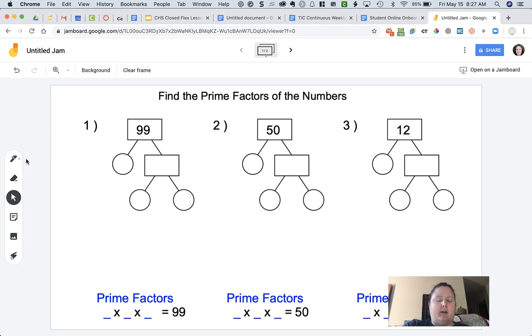I'm going to go ahead and write on my iPad screen. So 99, the two factors, I know that 11 and 9 go into it so I'm going to write down 11 and 9. You can see that as I am writing on my iPad it writes live on the screen and when it writes live on the screen that's what you're recording.